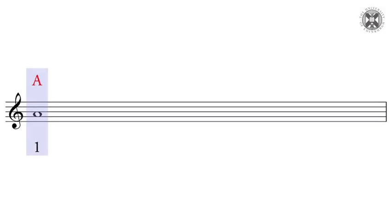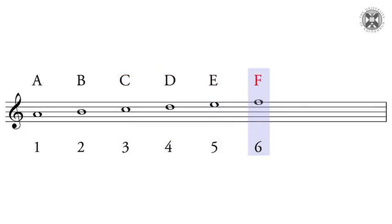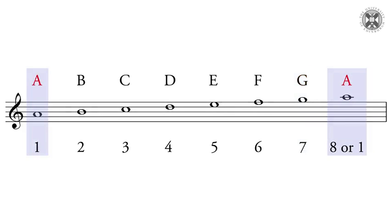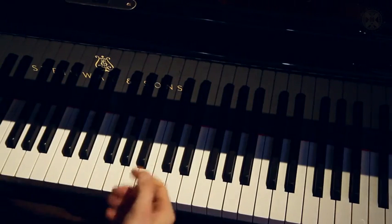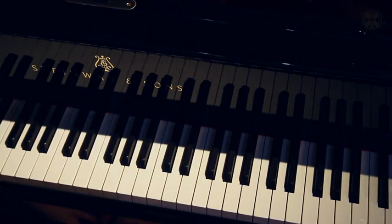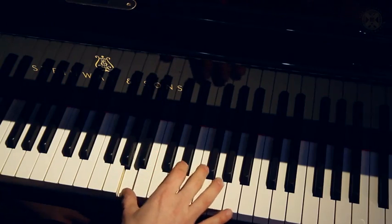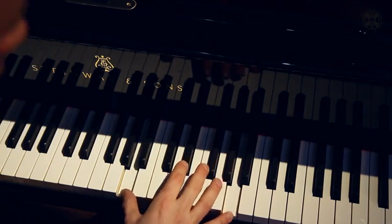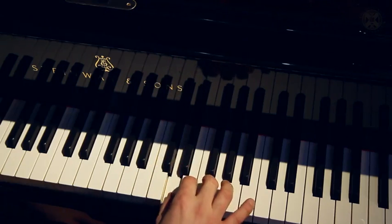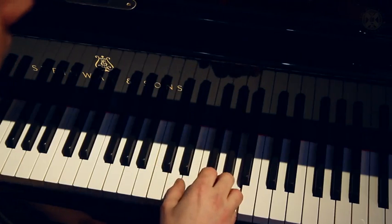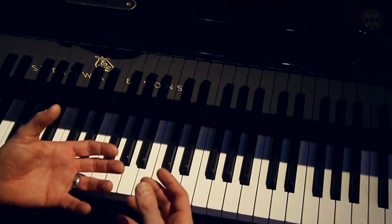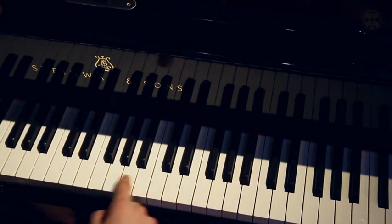Looking at our stave, here's A. If we count these notes — A being 1, B 2, C 3, D 4, E 5, F 6, G 7 — number 8 is when we come back to A. That's not going to be much of a surprise, given that we've called it an octave — octo, the eight. Back on the keyboard, the A we started with is here, and the A an octave above is up here: A, B, C, D, E, F, G, and A. You'll notice that uses every line and space on the stave, but we've only used the white notes on the piano — and that's going to become important.